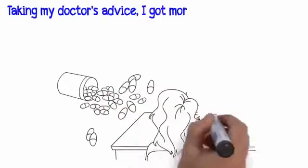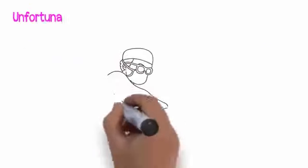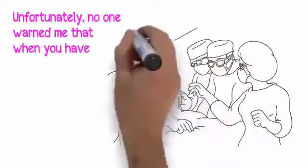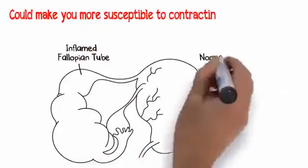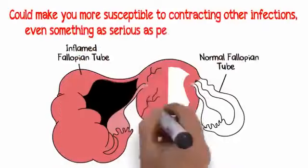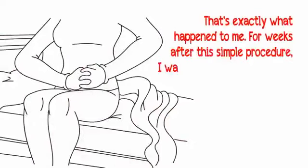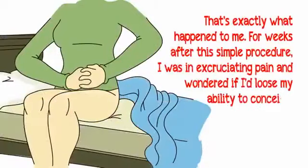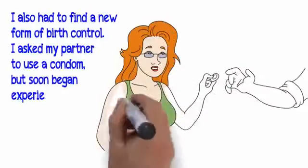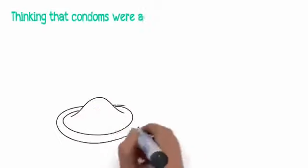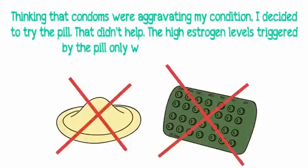Taking my doctor's advice, I got more antibiotics and made an appointment to remove my IUD, hoping that would stop infections. Unfortunately, no one warned me that when you have BV, any type of surgical procedure like getting or removing an IUD could make you more susceptible to contracting other infections, even something as serious as pelvic inflammatory disease. That's exactly what happened to me. For weeks after this simple procedure, I was in excruciating pain and wondered if I'd lose my ability to conceive. I also had to find a new form of birth control. I asked my partner to use a condom, but soon began experiencing pain upon penetration. Thinking that condoms were aggravating my condition, I decided to try the pill. That didn't help. The high estrogen levels triggered by the pill only worsened my BV symptoms.